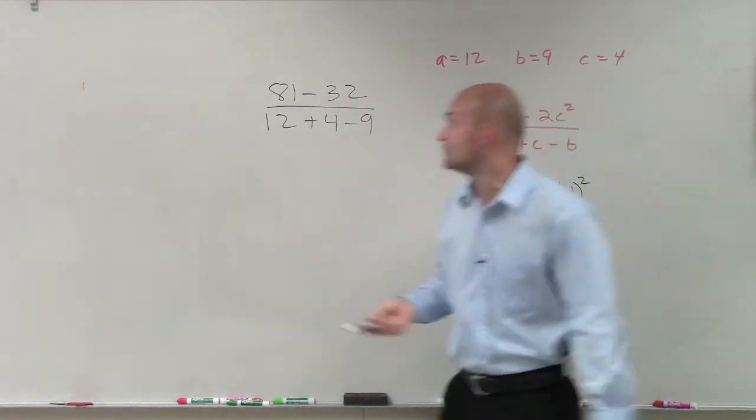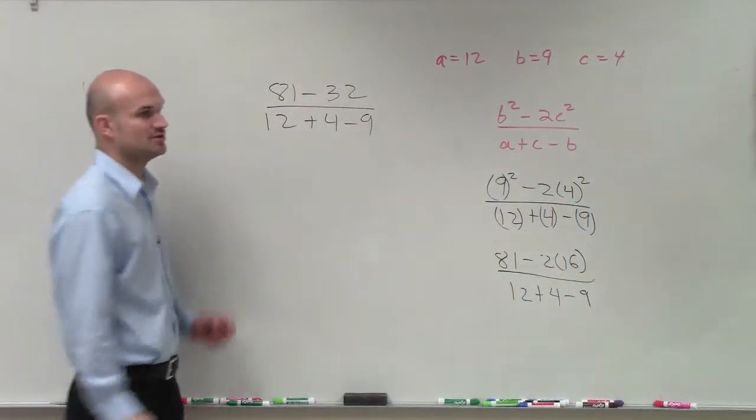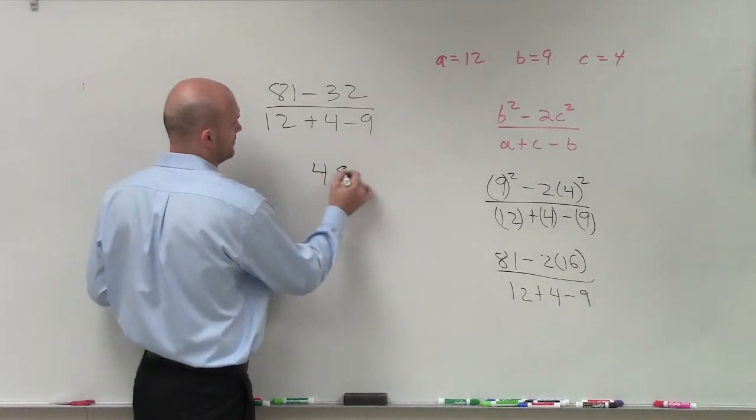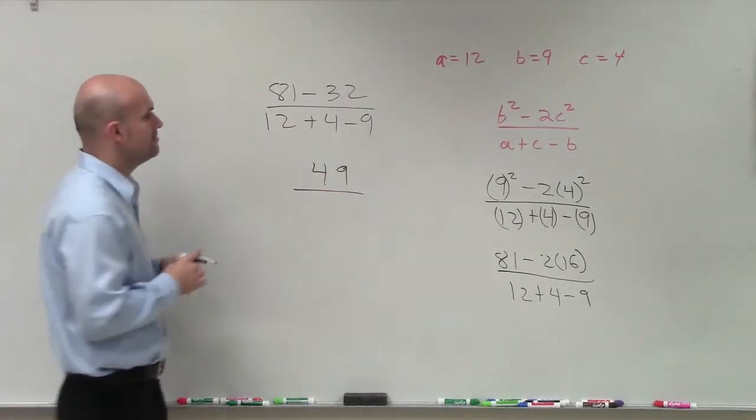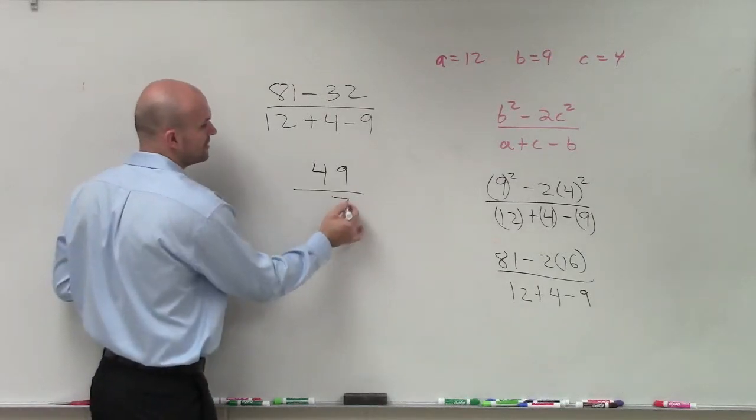I just work from left to right. So 81 minus 32 is going to be 49, divided by 12 plus 4, which is going to be 16, minus 9, which would be 7. And then 49 divided by 7 is 7.